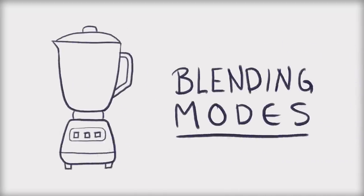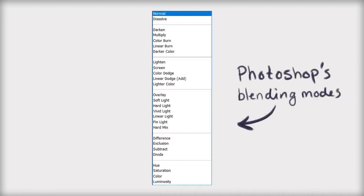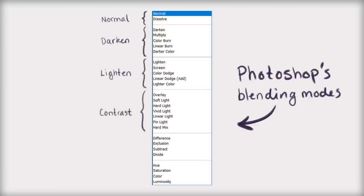Layers usually also have what's called a blending mode. In most software, blending modes are listed in a dropdown menu somewhere in the layers panel. A blending mode is exactly what it sounds like — it's the way a layer blends with other layers. Blending modes are often split into categories. In Photoshop those are: Normal (the standard mode that doesn't do anything fancy), a group that darkens the image, a group that lightens it, a group that provides contrast, a group that inverts or cancels values, and a last group of component-based modes dealing with color.